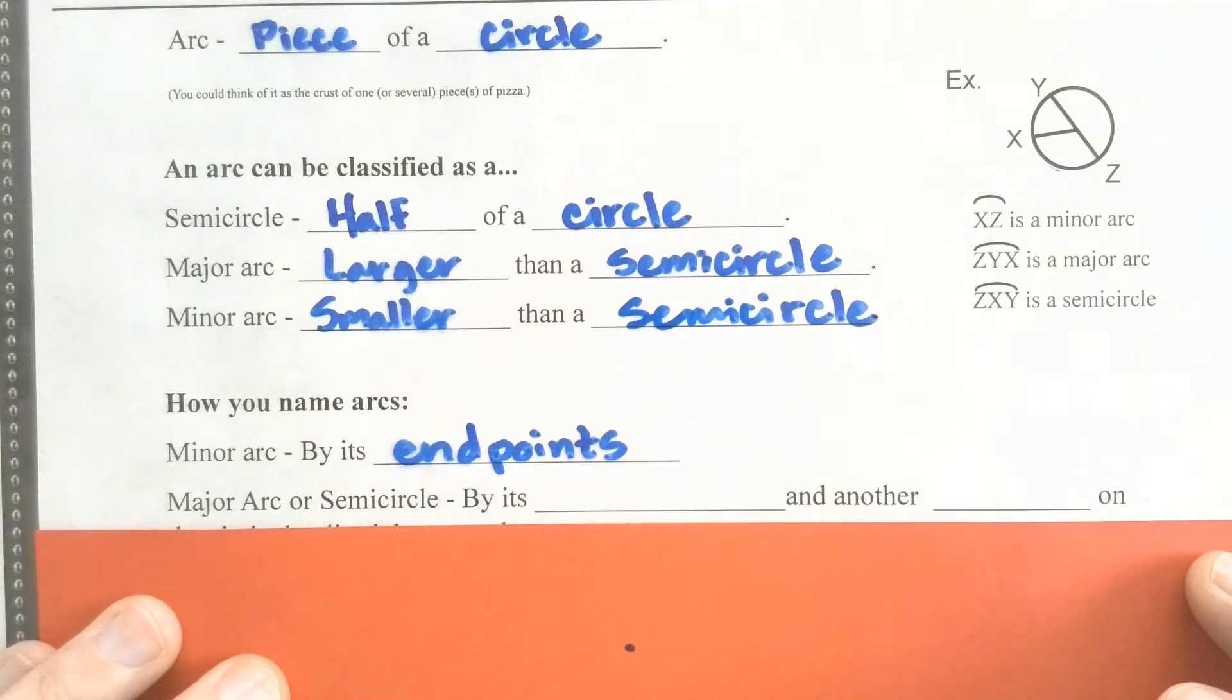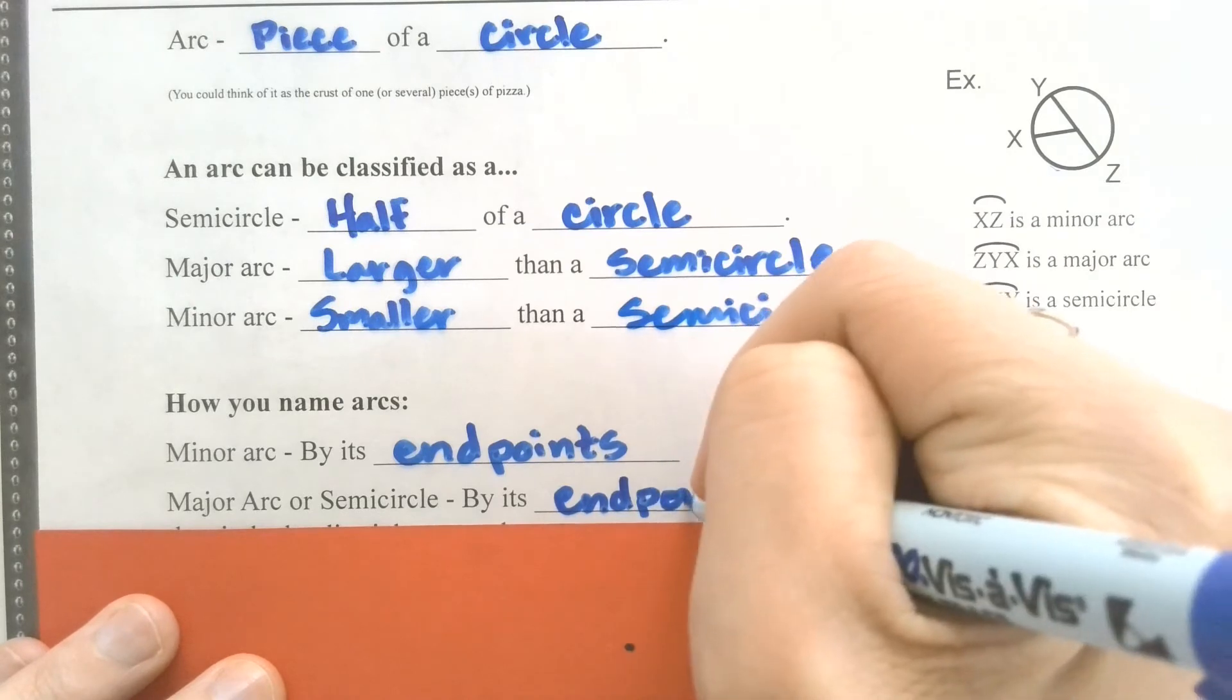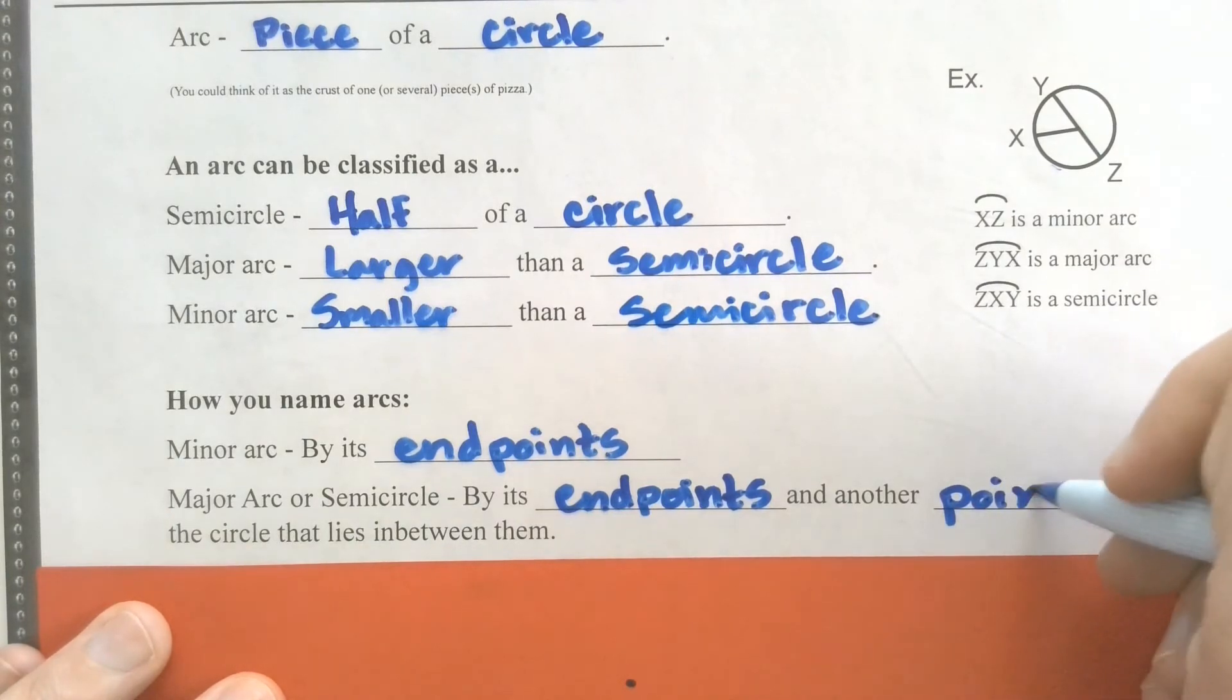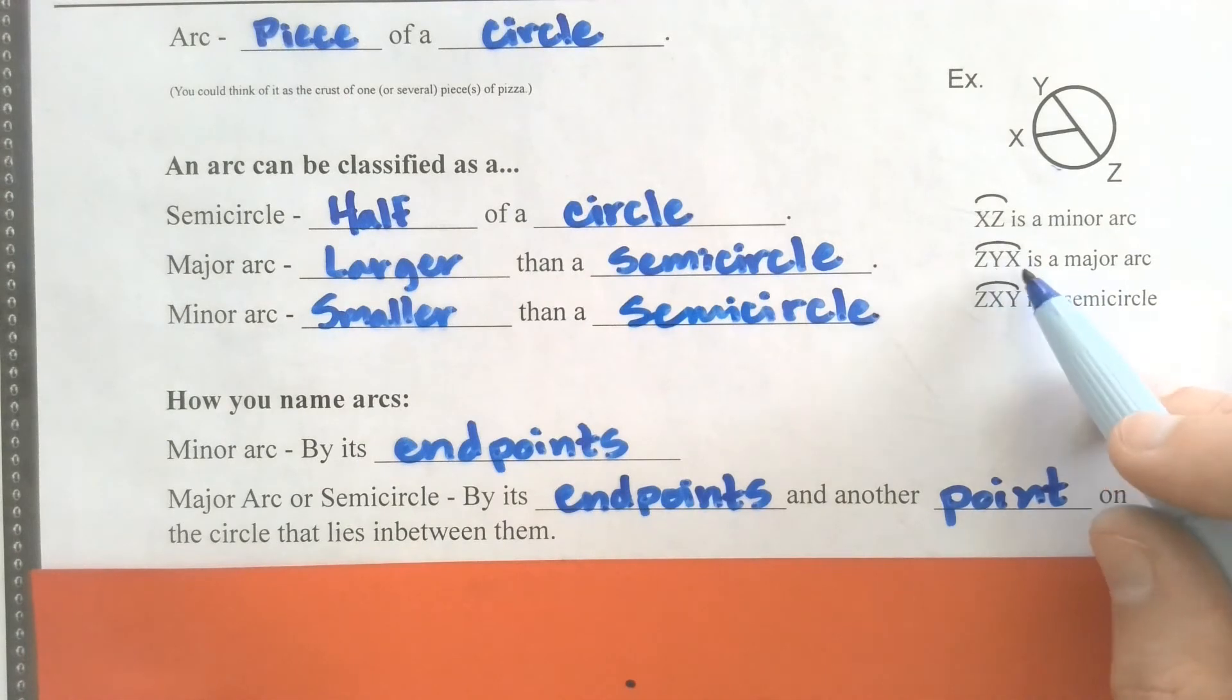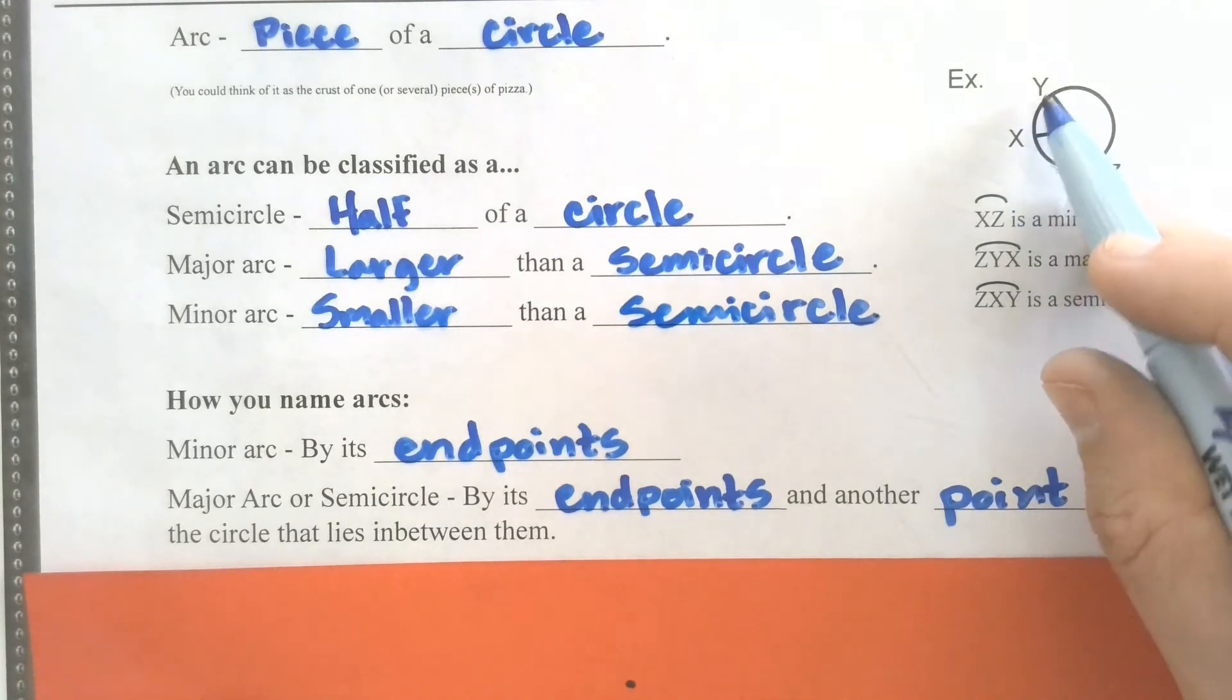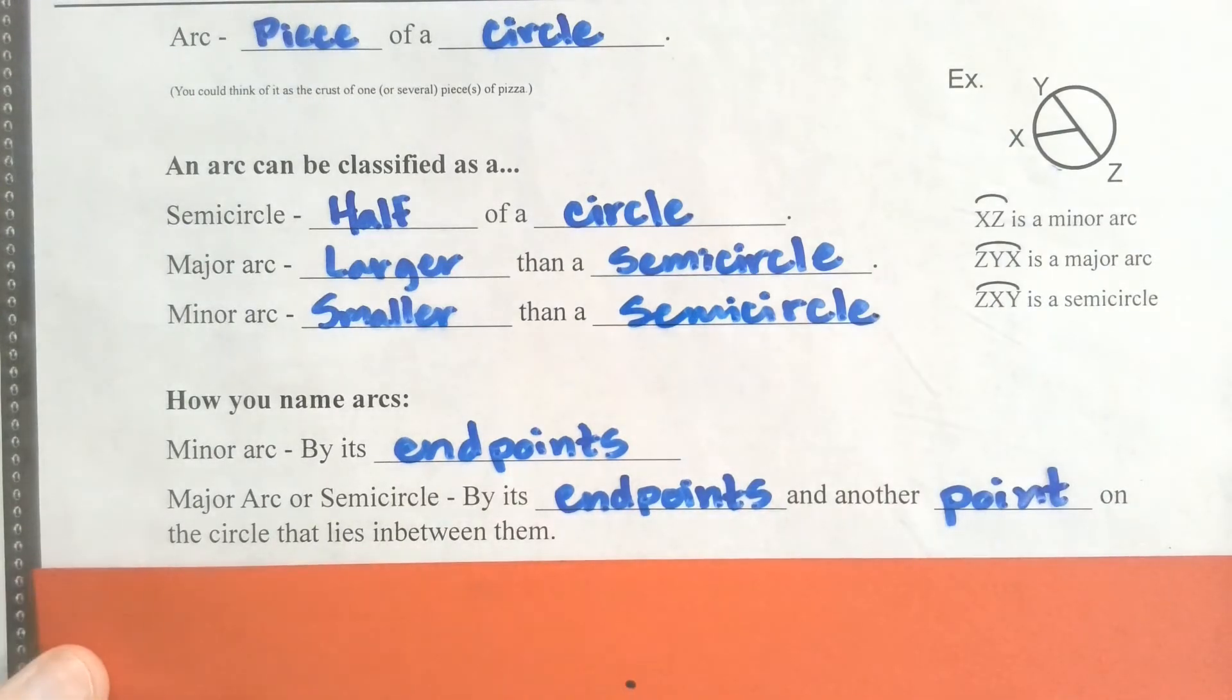If it is a major arc or a semicircle, it's going to give its endpoints, but then it's also going to give another point on the circle that is in between those endpoints. So we've got two examples here. Z, Y, X is a major arc. So if we start at Z, we have to go through Y to get to X. That middle letter will always be in between them. So this would be the major arc Z, Y, X. And then Z, X, Y is a semicircle. As long as you follow it in the correct order, then you'll be fine on those major arcs and semicircles.